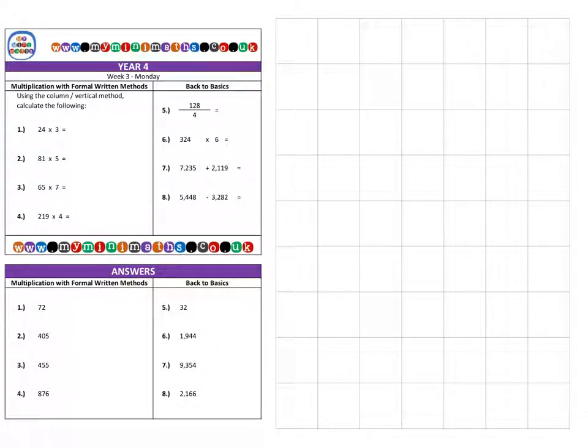Next, question two: 81 multiplied by 5. We're going to focus on the column method like in the second part of the first question. I've got 8 for my 80, then I've got 1 for my unit, and I'm going to multiply that by 5.